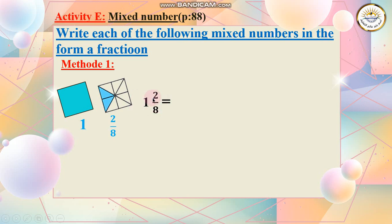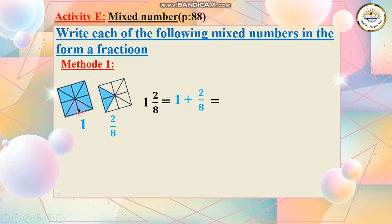Now, how do I write it in the form of one fraction? So I write 1 plus 2 over 8. I'm going to calculate the colored parts. 1 is 8 over 8 because this form is distributed into 8 parts. So I write 8 over 8 plus 2 over 8. Now I add the numerators: I have 10 over 8. So this is the one fraction.